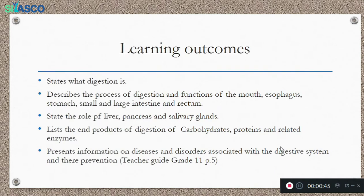Here are the learning outcomes. Once you follow these lessons, you should be able to state what digestion is, and also describe the process of digestion and functions of the mouth, esophagus, stomach, small and large intestine, and rectum. You should also be able to state the role of the liver, pancreas, and salivary glands, and list the end products of digestion of carbohydrates and proteins and the related enzymes. Finally, you should be able to present information on diseases and disorders associated with the digestive system and their prevention.